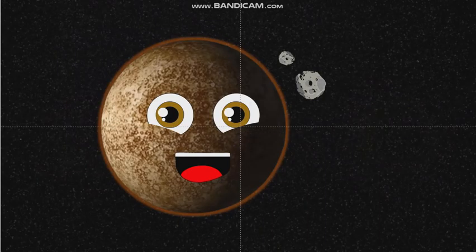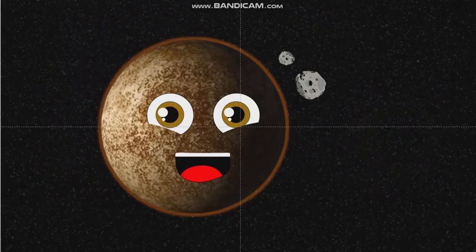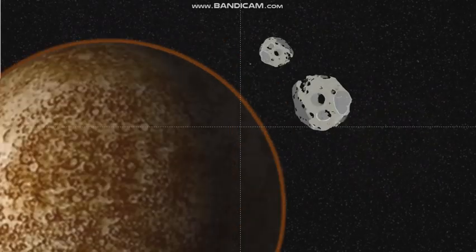I'm Mercury, the smallest planet you see. You humans could never live on me. My atmosphere's too thin and I orbit too fast. My days are long.